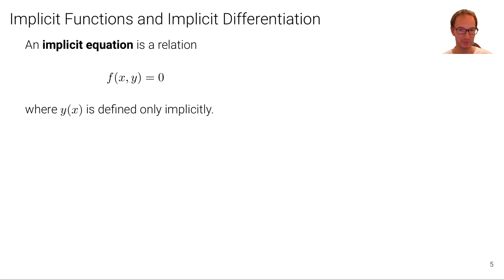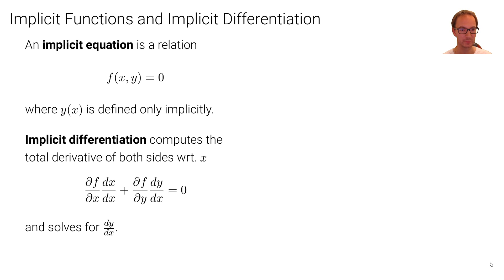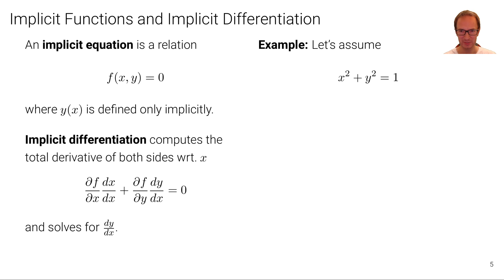Let's now move to implicit functions and implicit differentiation. An implicit equation is a relation described as f(x, y) = 0, where the function y(x) is defined only implicitly and cannot be defined explicitly. Maybe it's not even a function — it could be a curve that doesn't have a unique y value for every x. Implicit differentiation computes the total derivative of both sides with respect to x. The right-hand side gives zero, and then we can solve for dy/dx.